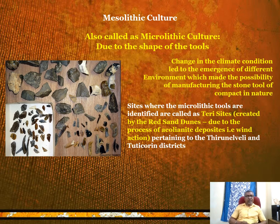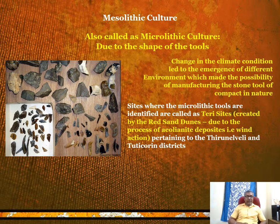During the Paleolithic period, across all three subclassifications, the tools were very large in size and heavier in weight. But in the Mesolithic period, tools are in very tiny and reduced sizes. This is because of the change in climatic conditions, which led to different environments, making the manufacture of compact stone tools necessary. The Mesolithic sites identified in Tamil Nadu are called Theris sites, named from the formation of red sand dunes.